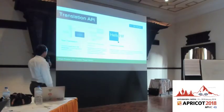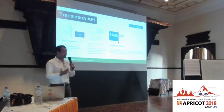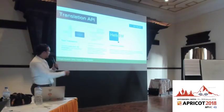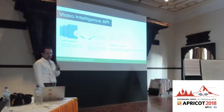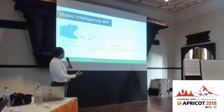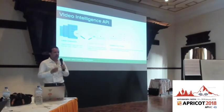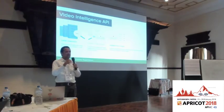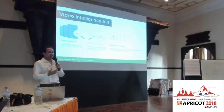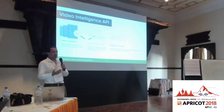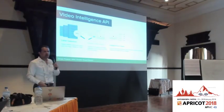Next up is the Translation API — parse some text in one language, get it out in another. Fairly simple and works in many languages. Finally, the Video Intelligence API — similar to the image API except you're uploading a video. We can tell you where we saw certain objects at certain time frames in that video. You can imagine taking this and making a search engine for videos — 'show me all the videos that have pandas in them' — and now you can do that with your own data very easily.